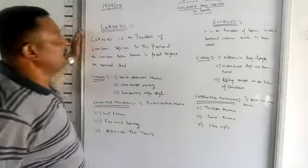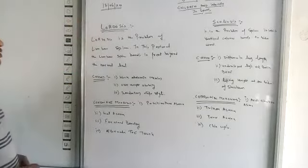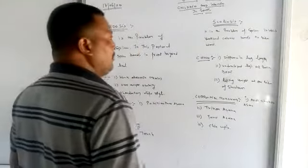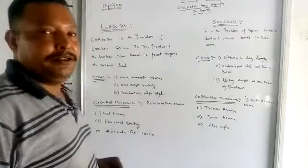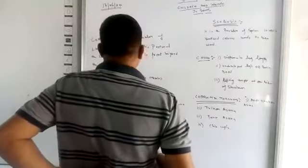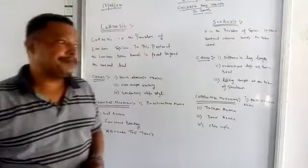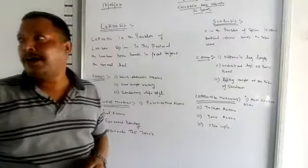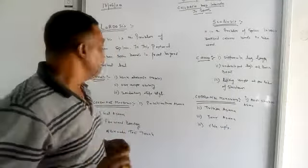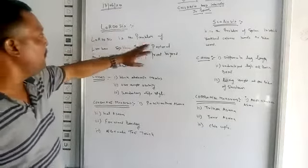Students, we come to the second last postural deformity according to your syllabus, that is known as Lordosis. Basically this is the problem of the lumbar spine. As explained in the previous video, there are two basic parts of our spinal cord: the upper part and the lower part, which is the center part known as the lumbar spine. The lumbar spine is divided into parts from L1 to L7 and is also known as the power bank of the human body.